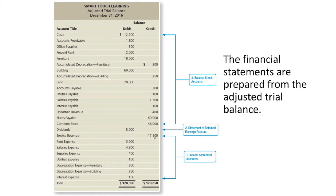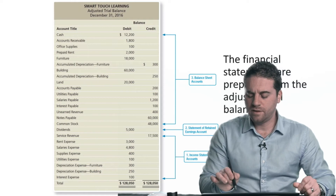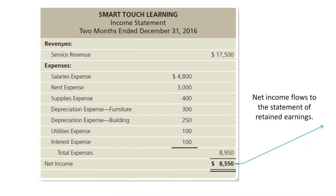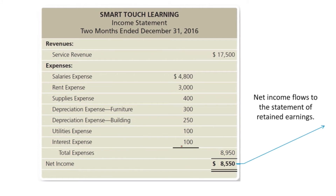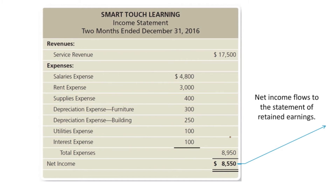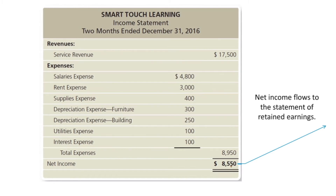We've got $17,500 for the revenue, $3,000 for an expense, and so on — I just need to copy these amounts. There's no adding or subtracting when you prepare the financial statements; you just copy these amounts into the income statement. Service revenue was $17,500. All the expenses are lined up with the same amounts from the adjusted trial balance, and the total expenses were $8,950. Subtract $8,950 from $17,500 and that's $8,550, which is the net income — the net profit the company earned.